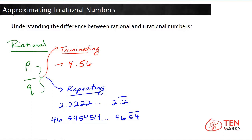The second type of decimal that you can get is a repeating decimal. Some examples are 2.22222..., where the dots indicate the number continues on forever. Another example is 46.545454..., which will also repeat forever. In a repeating number, either a single digit or a group of digits in a specific pattern repeat forever. The way to mark this is by putting a bar over the digit or group of digits that repeats.